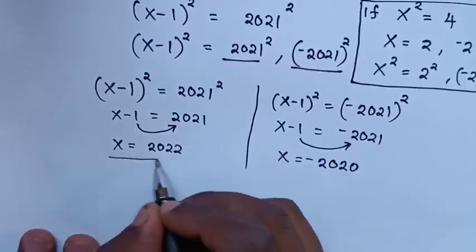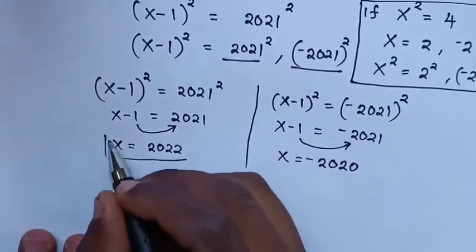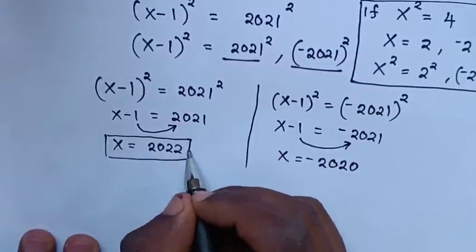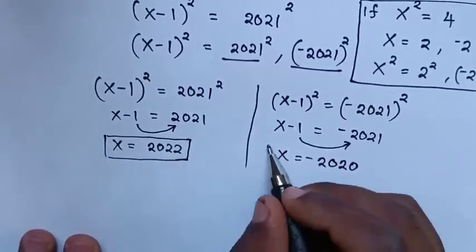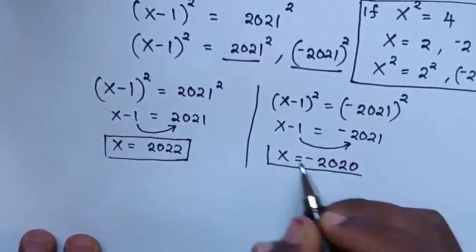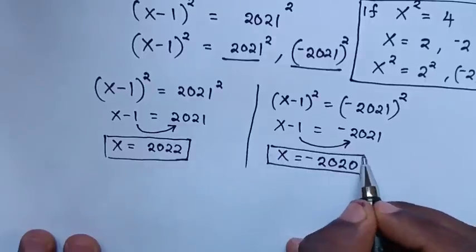These are the values of x. We have 2 answers: x = 2022 and x = -2020.